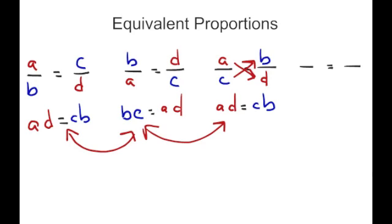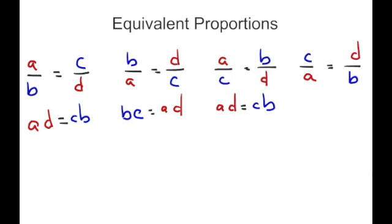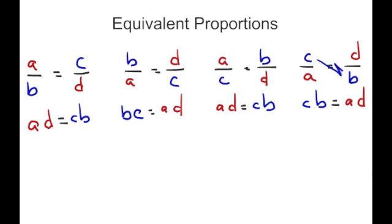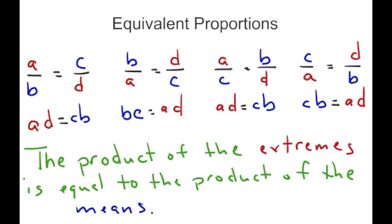On my fourth form, I reverse the order of A and C and of B and D, giving C over A equals D over B. That gives me C times B equals A times D. For all four of these, the product of the extremes equals the product of the means. Your proportion can be set up four different ways, as long as your cross products are equivalent — so two people can set it up differently and both be correct.